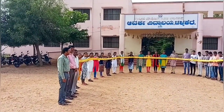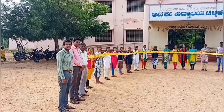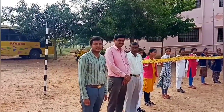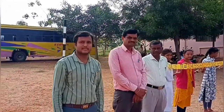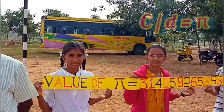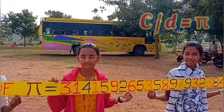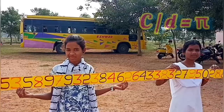This is the activity representing the value of pi. If you take any circle with any radius, the ratio of its circumference to diameter is always a constant value. This constant value is represented by a Greek letter pi.